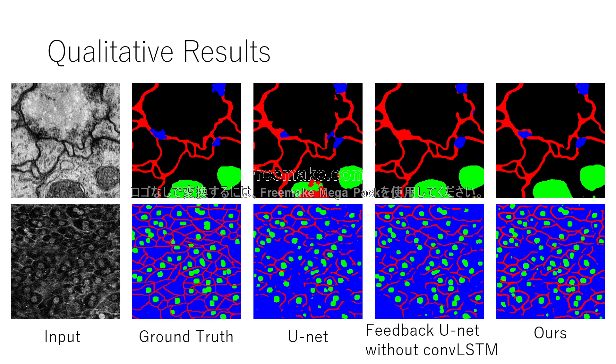On mouse cell image dataset, there is no big difference between R-UNet and feedback U-Net without convolutional LSTM. In both methods, cell membrane are not connected well. However, our approach improves the accuracy of cell membrane and more connected.